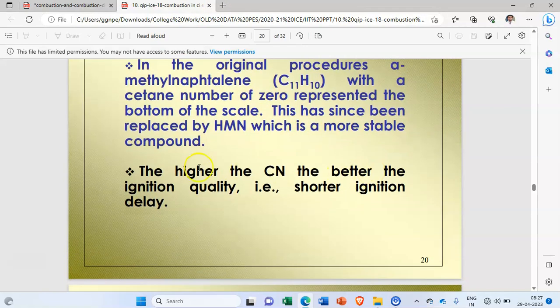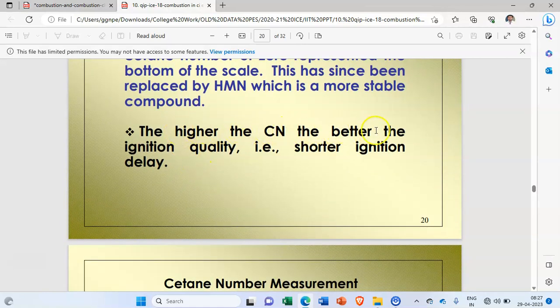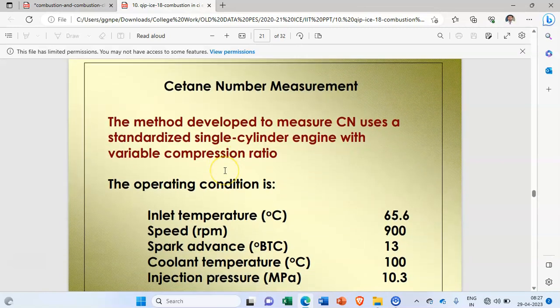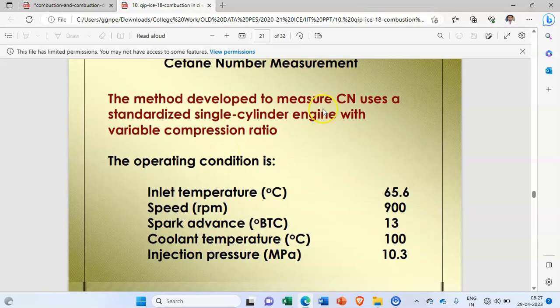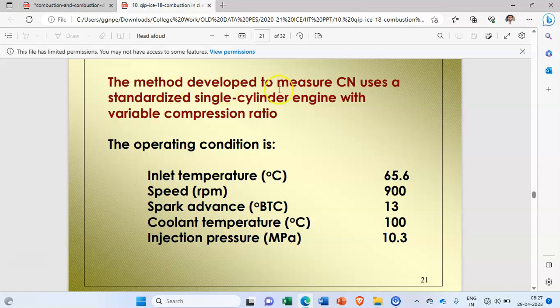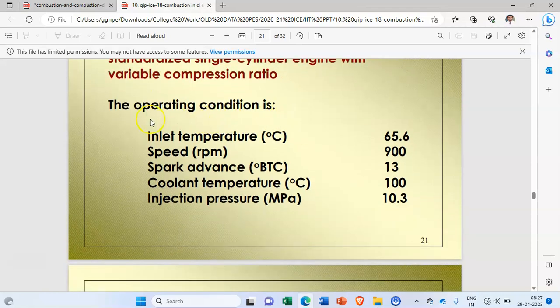Which is a more stable compound. The higher the cetane number, the better the ignition quality, that is shorter ignition delay. The method developed to measure cetane number uses a standardized single cylinder engine with variable compression ratio.